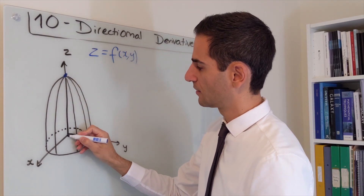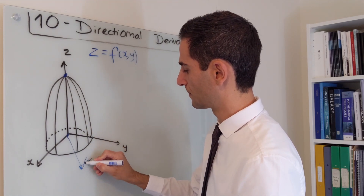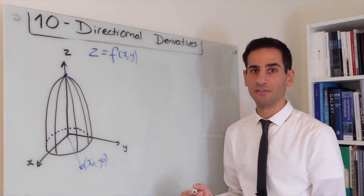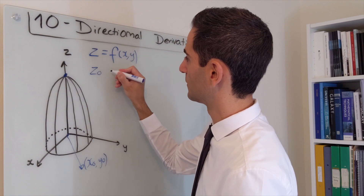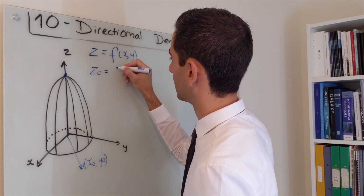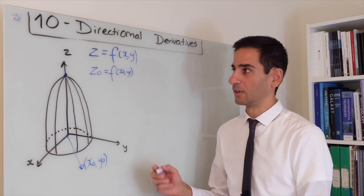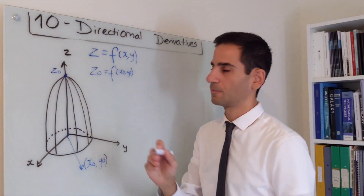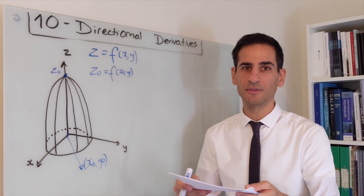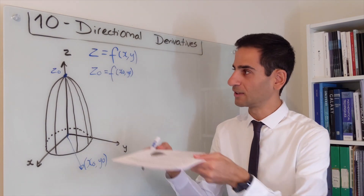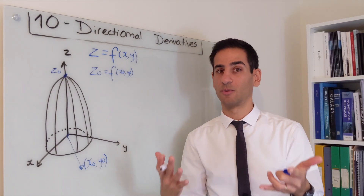Now consider this function, which you can also find in the lecture notes. Let's say that we want to get a tangent plane to this point over here. In these kinds of functions, we've already seen that z is a function of x and y, and this would be the surface itself. Let's say that this point has coordinates x0, y0. If that is the case, it means the point itself, which we could call z0, is obtained when you plug in x0, y0. And we can also label it here — this is the point we want to get a tangent plane at.